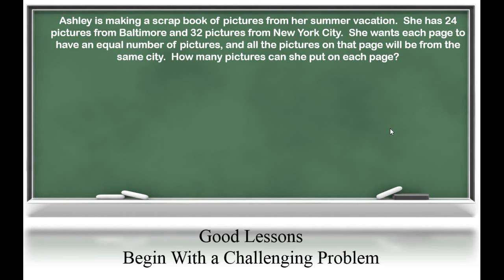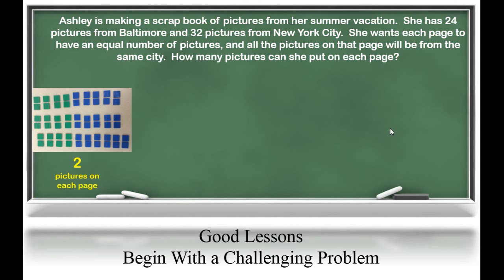Let's look at how students might solve this. Students could make a model using manipulatives. In this model, the green square tiles will represent the 24 pictures from Baltimore, and the blue square tiles will represent the 32 pictures from New York City. A student would start by dividing them into groups of two pictures on each page. You can see that two is a factor of both 24 and 32, so Ashley could have two pictures on each page.